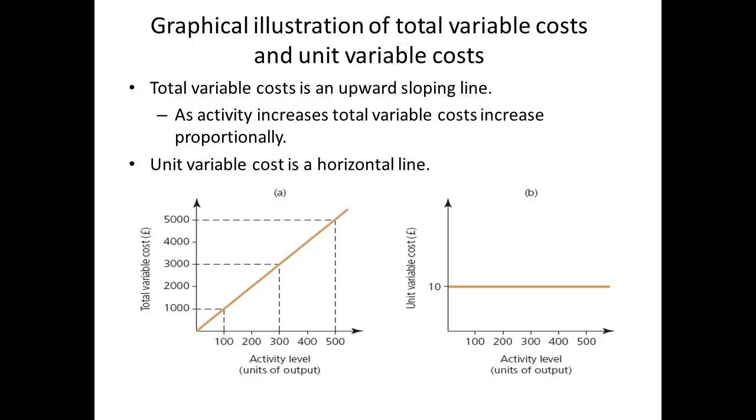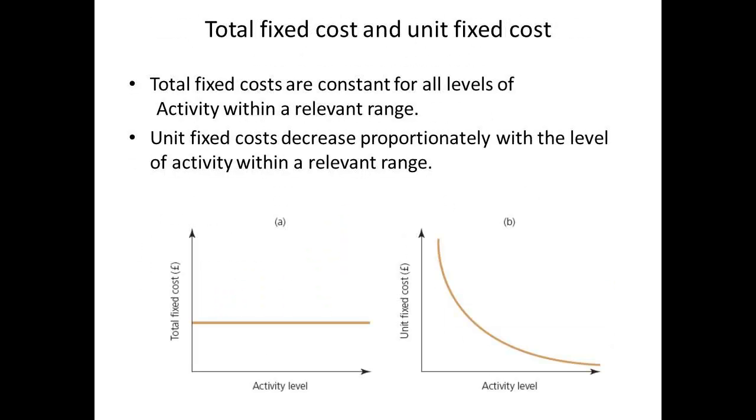The slope of the line will vary for variable costs, it may not even be a straight line. Fixed costs as total fixed costs give a horizontal line. There are exceptions to this. It is possible to have unit fixed costs that decrease proportionately with the level of activity within a relevant range.